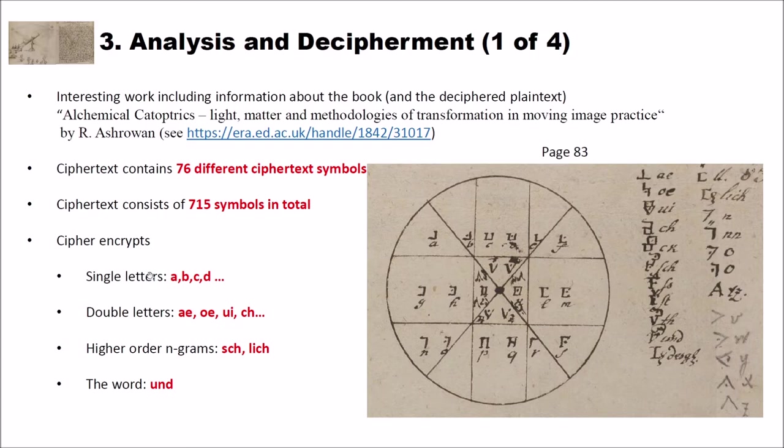And the cipher encrypts single letters like A, B, C, D. You can see this here. It encrypts double letters like AE, OE, UE, and CH. You can see these here on the right side.